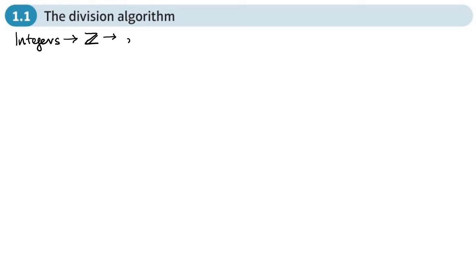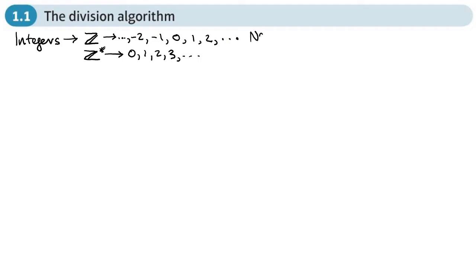Integers are positive and negative, so we can write them like this, using dots to show they go on forever. If we're just interested in positive integers, some textbooks use slightly different notation — we're just talking about positive integers. We also have what we call natural numbers, which you may have encountered in Core 1 when learning about the sum of natural numbers. These are just the counting numbers, and we use an N like this to represent them.